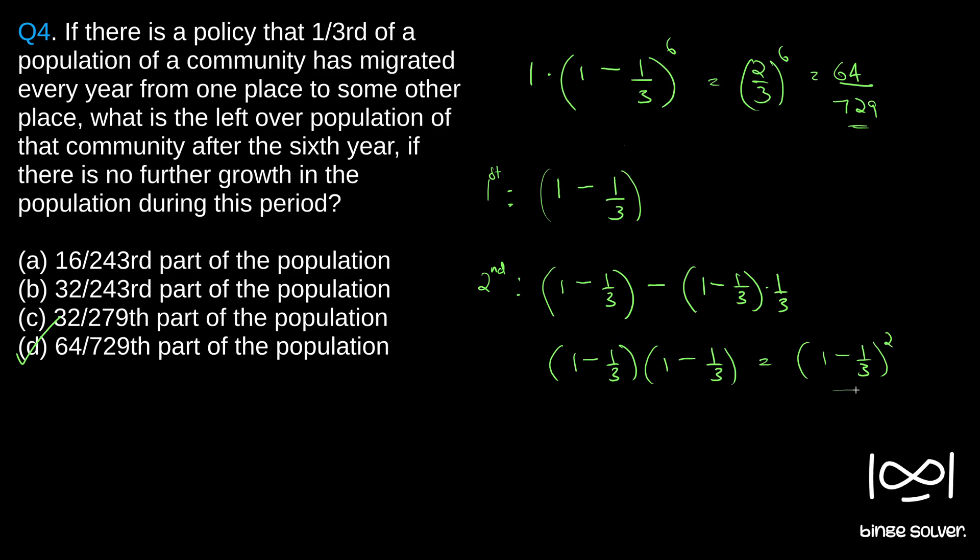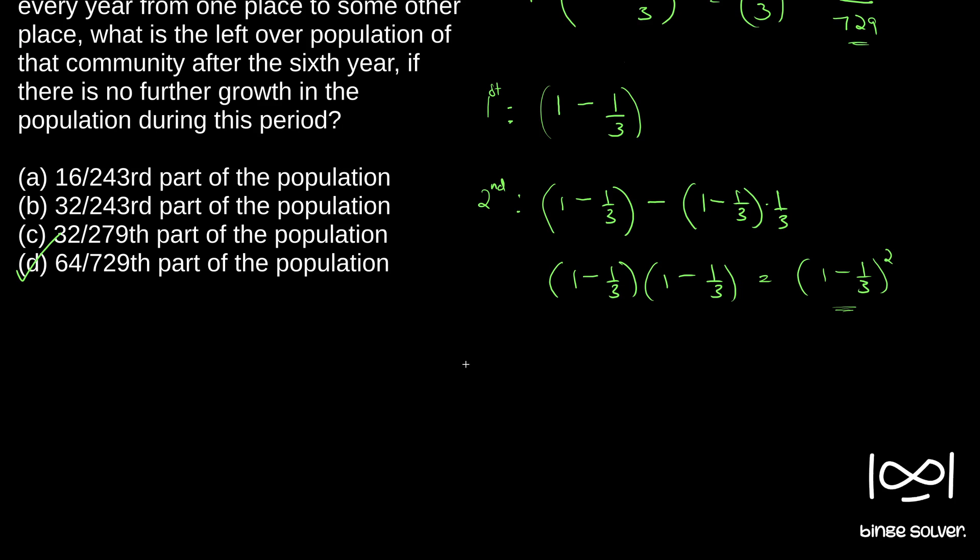So after second migration we will get 1 minus 1 by 3 square as our final population. So similarly after third year what happens? 1 minus 1 by 3 the whole square is the new population and it further gets reduced by 1/3. So if you take 1 minus 1 by 3 the whole square as common, we will again get 1 minus 1 by 3. You will get 1 minus 1 by 3 the whole cube as population after third year.